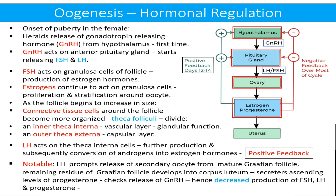Luteinizing hormone prompts release of the secondary oocyte from the mature Graafian follicle. The remaining residue of the Graafian follicle develops into the corpus luteum, which starts secreting ascending levels of progesterone. This progesterone has a negative impact on the hypothalamus and pituitary and checks the release of gonadotropin-releasing hormones as well as gonadotropins, hence decreased production of FSH, LH, and progesterone as well. This whole process makes the negative feedback loop over most of the cycle.